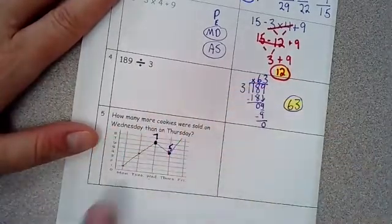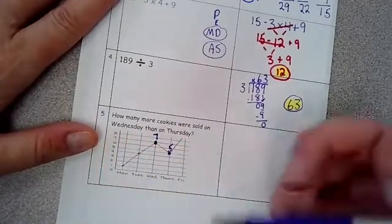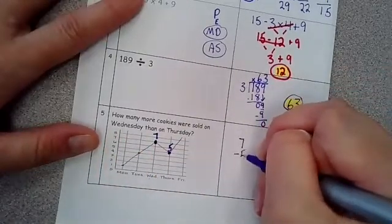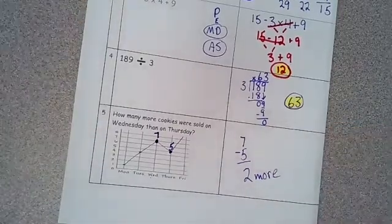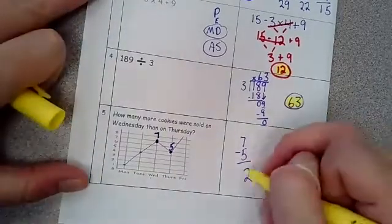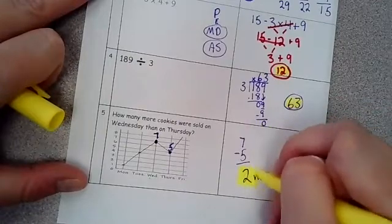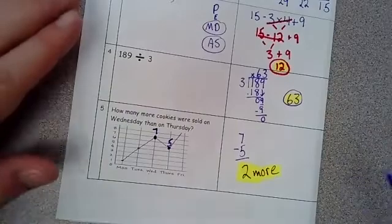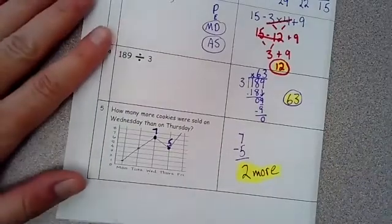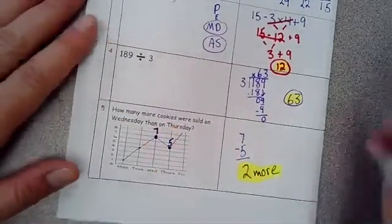Well, the question is how many more cookies were sold on Wednesday than on Thursday? Seven minus five, there were two more sold. Miss Ross, this is so easy. I promise you we wouldn't be giving them to you if kids weren't missing them. Okay. So just bear with us. Alright. So there were two more sold on Wednesday than on Thursday.